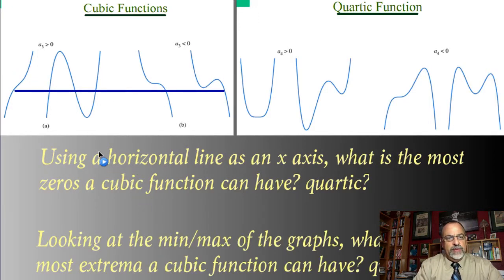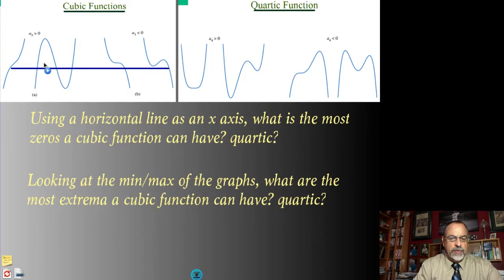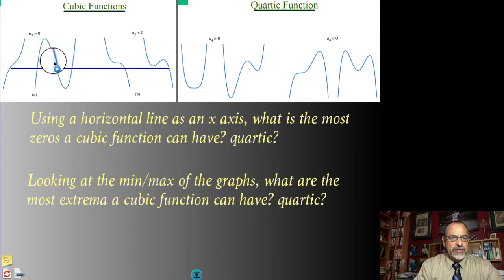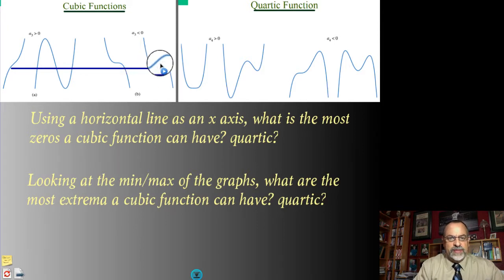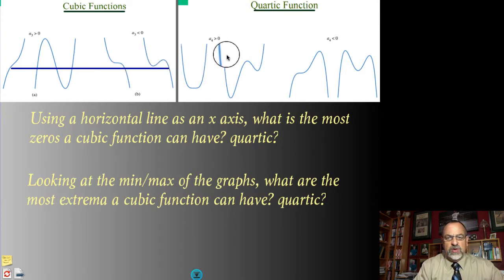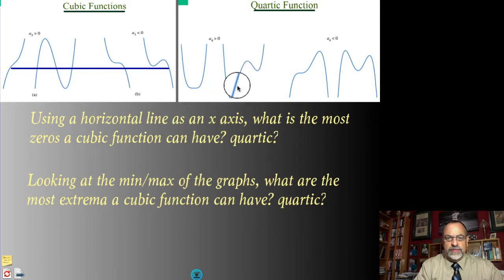Looking at the minimum and maximum points, how many mins or maxes could a cubic function have at most? Here there's a max and a min — that's two — and there's no way to make it have more than two. For a quartic, which is fourth degree, you can have three: a minimum, a maximum, and another minimum. But you can never make it have more than three.